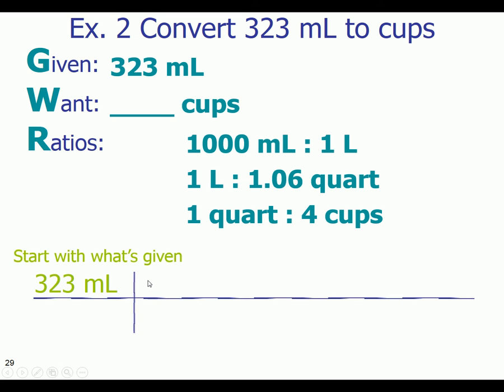We always start with the given over 1 as our starting point. And then we try to figure out what goes down here based off of the unit in the given. So if the given is in milliliters, we want milliliters down here, too. So I'm going to take this number, this 1,000 milliliters, because that's the only place I see milliliters on my ratios. And I'll put it in the denominator.